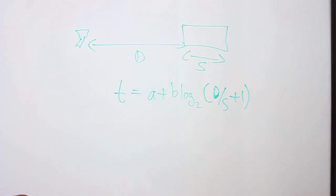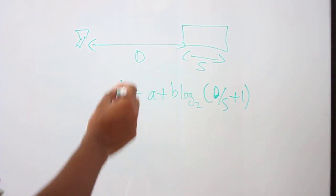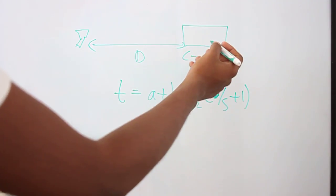You want this time to be as small as possible when designing any such interface, because that means the user can do what he wants to do much more efficiently and faster. So T here is time, and D is the distance, and S is the size of the target.